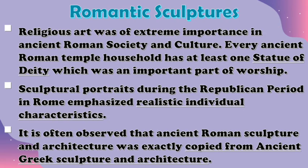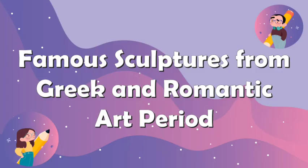In the Roman sculptures, religious art was of extreme importance in ancient Roman society and culture. Every ancient Roman temple household has at least one statue of a deity or god, which was an important part of worship. Sculptural portraits during the republican period in Rome emphasize realistic individual characteristics. It is often observed that ancient Roman sculpture and architecture was exactly copied from ancient Greek sculpture and architecture. Here are some famous sculptures of the Greek and Roman people during this art period.